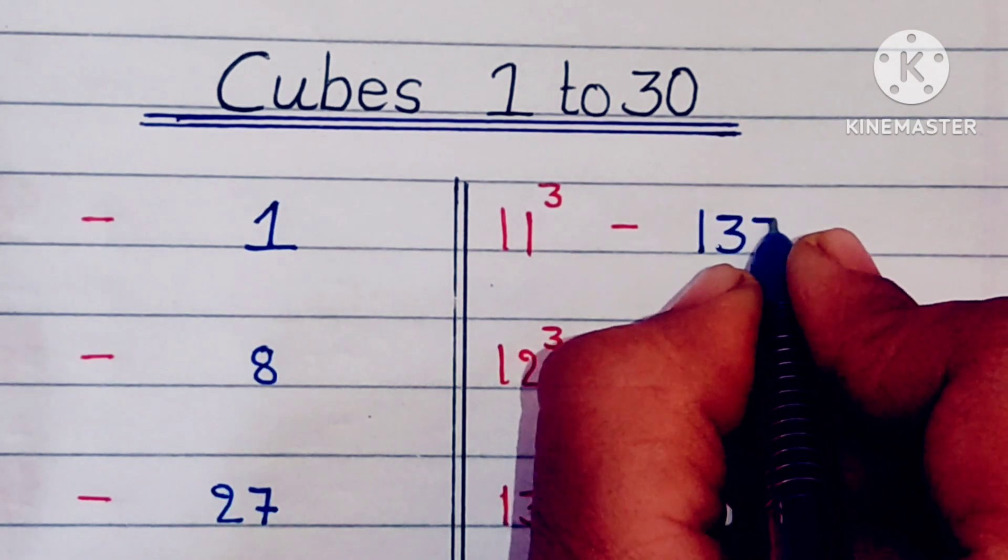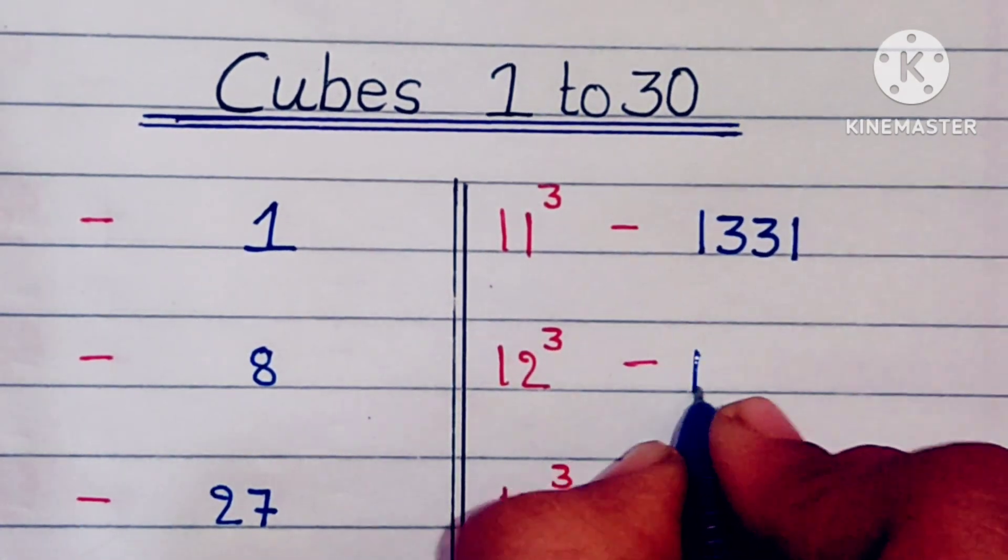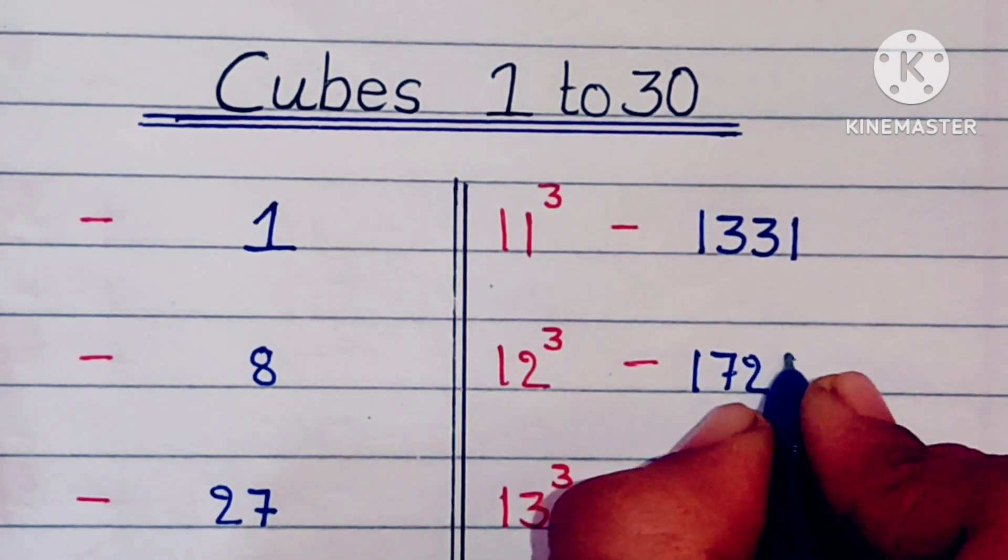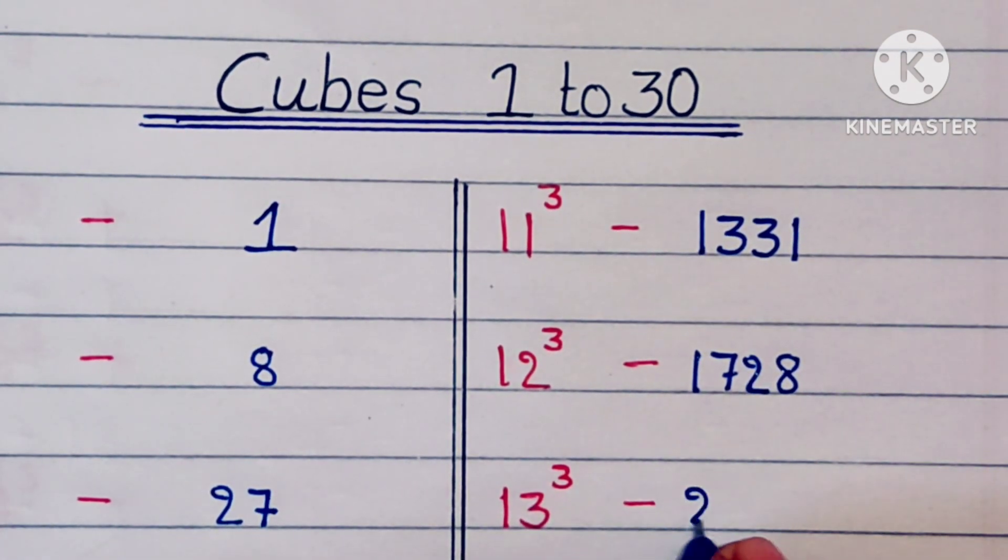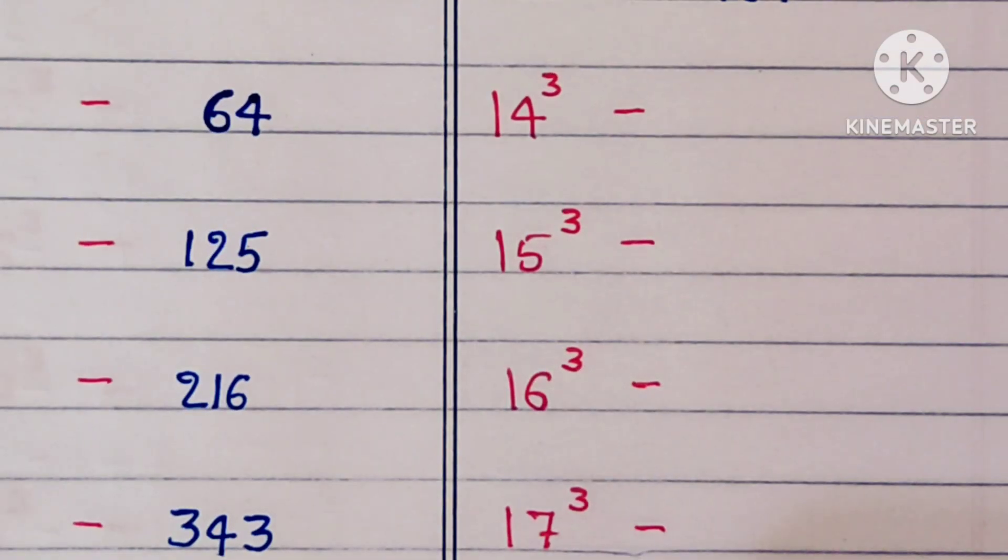11 cube is 1331, 12 cube is 1728, 13 cube is 2197.